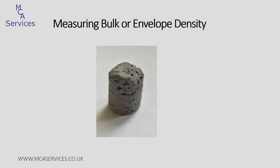The sample we used in the previous video, and are using in this one as well, is a 12 millimetre core cut from an autoclaved aerated concrete block. This is a nice easy sample to start with. It's a single solid piece of material and it also has obvious porosity within it. For the measurement of bulk density we want to include the volume of these pores in the calculation of the density.